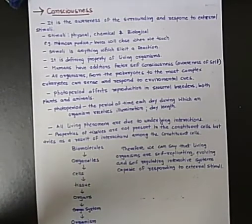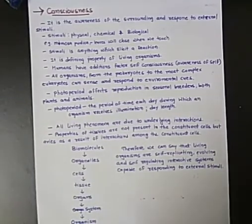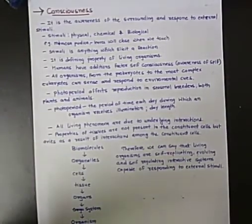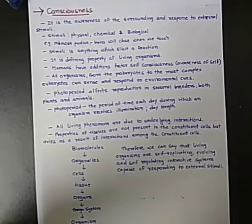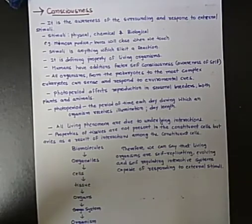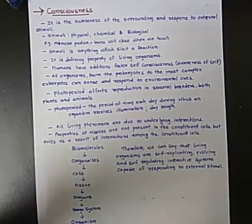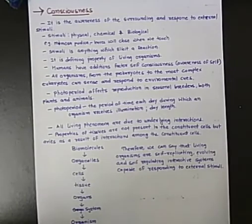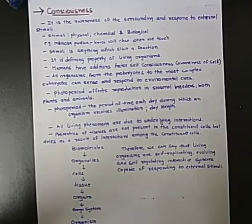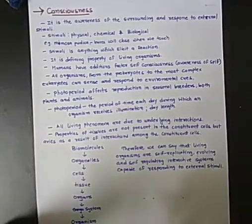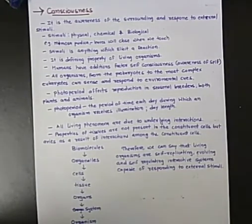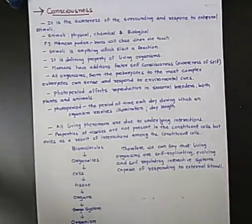All living phenomena are due to underlying interactions, meaning our body has many reactions. The properties of tissues are not present in the constituent cells, but arise as a result of interactions among the constituent cells. At the base level, there are biomolecules, which are organized into organelles like chloroplasts, lysosomes, and the Golgi apparatus.